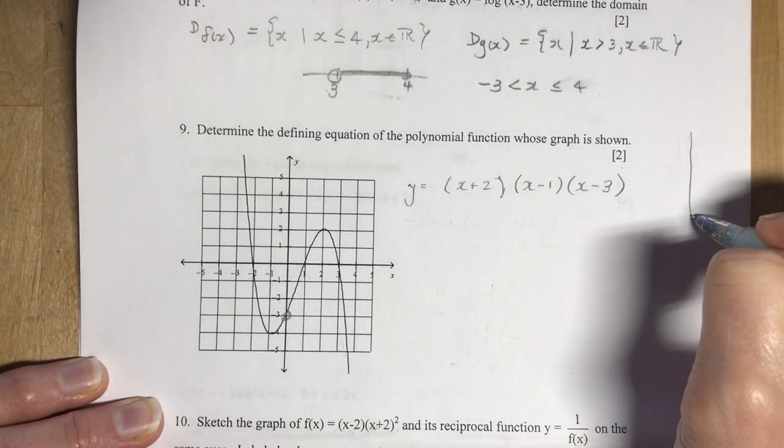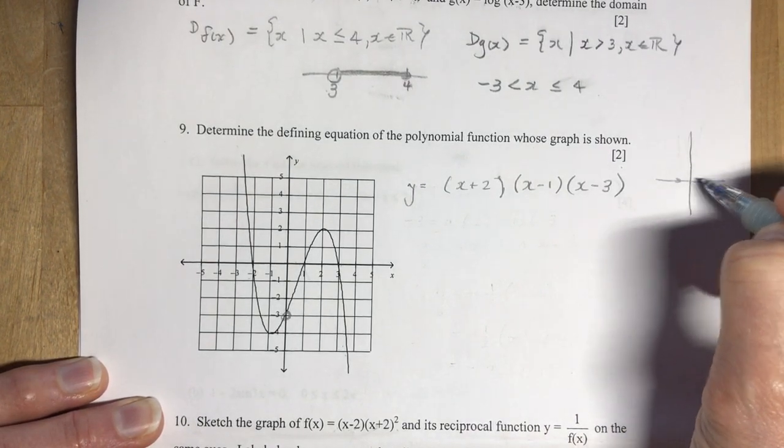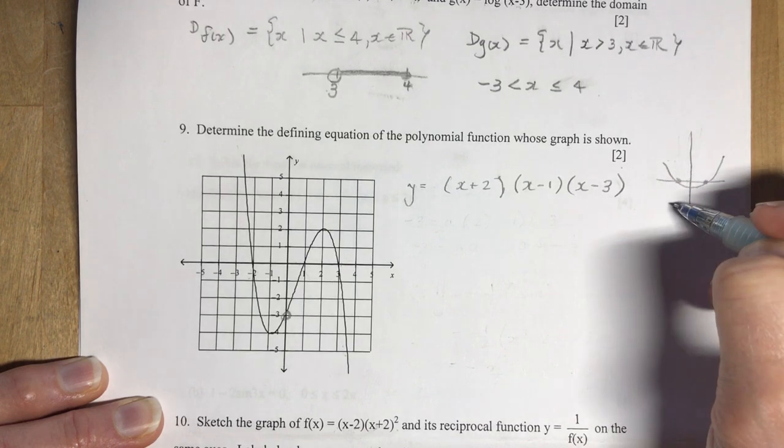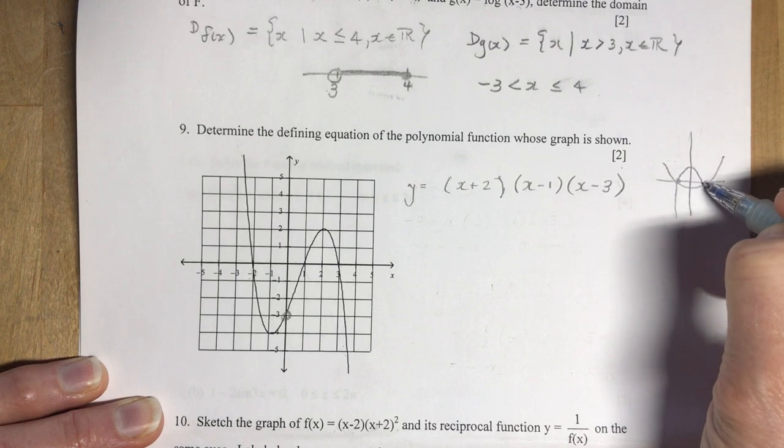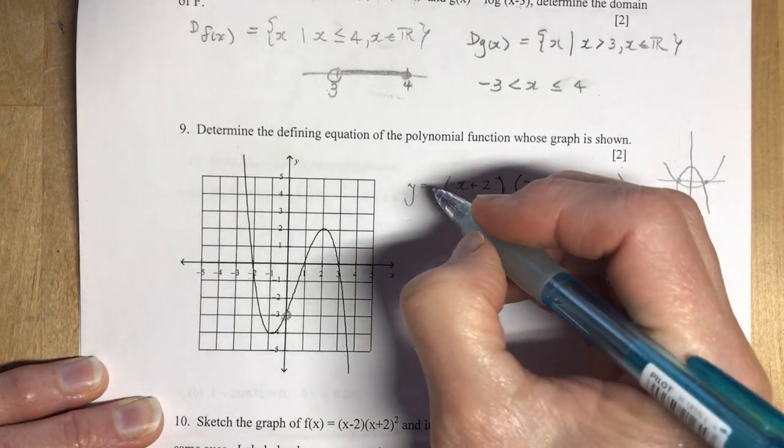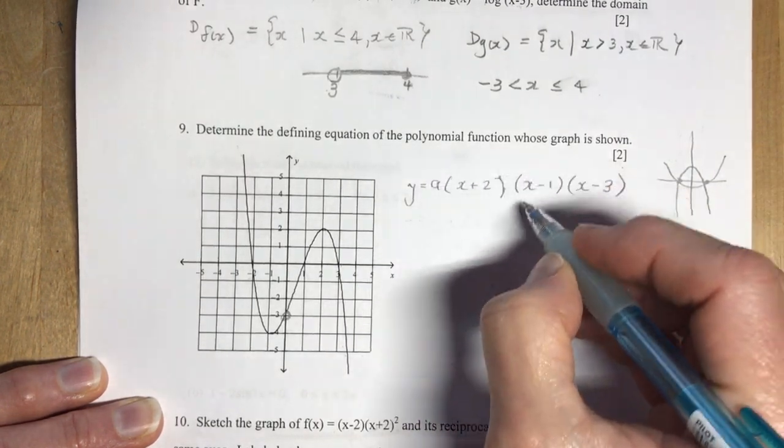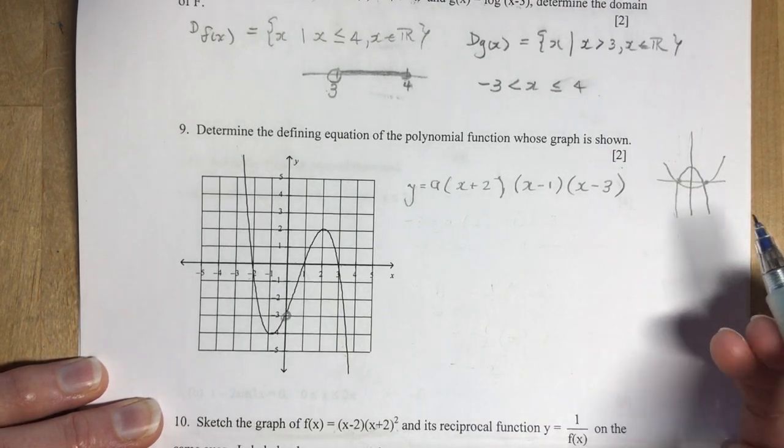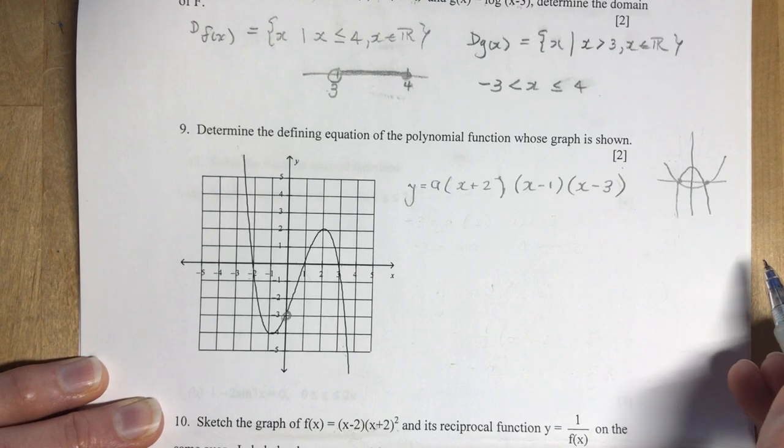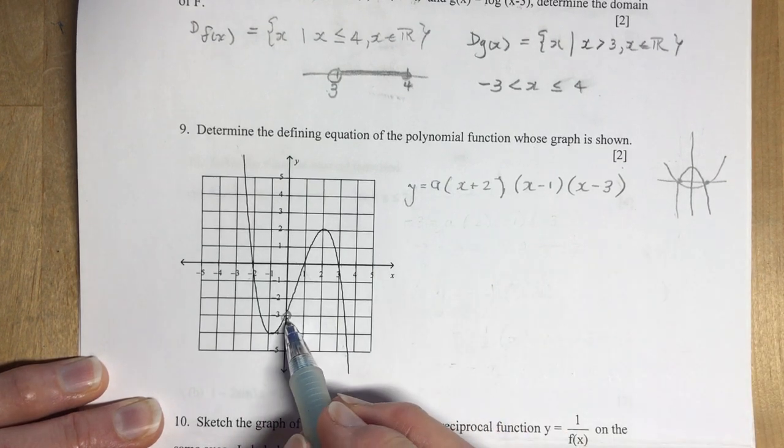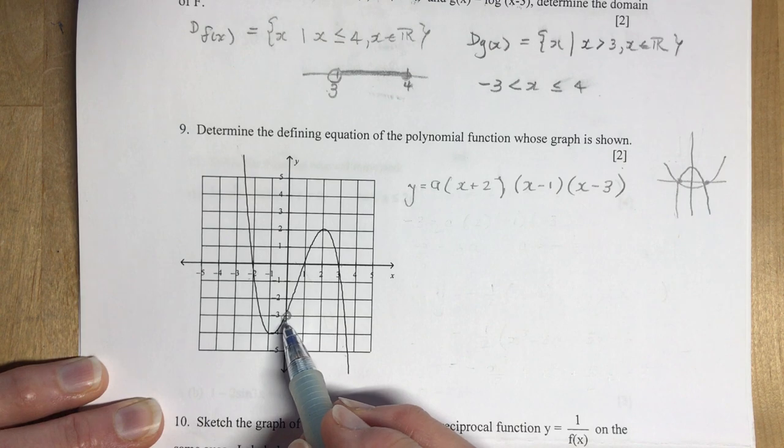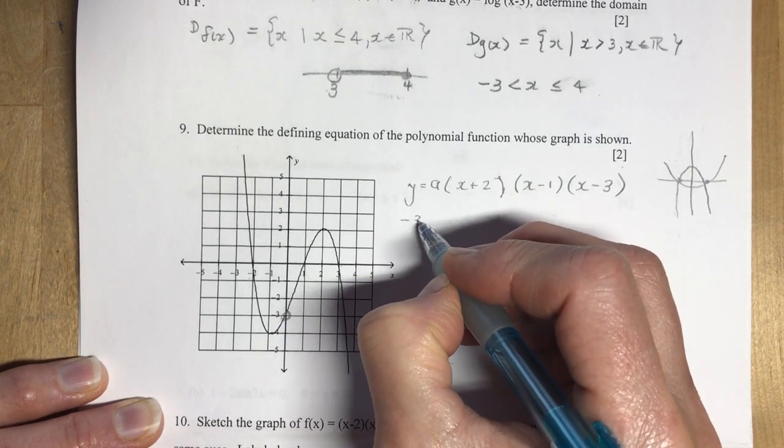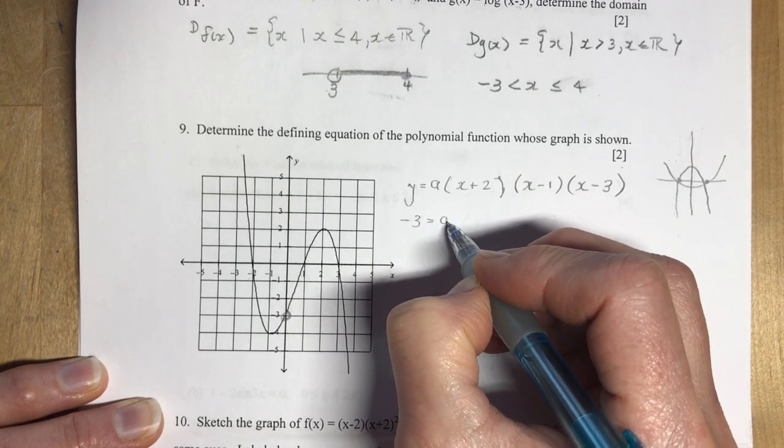Now if you recall from quadratic days when you have two zeros, the shape of the function could be very different depending on something called the a value. I need to solve for a. Don't stop here and expand and think you're done. That will get you probably one mark. And this is so easy. Let's find another point and I would choose this one right here on the y-axis. So I have the point zero and minus three. I'm going to solve for a by plugging in zero for x.